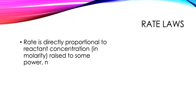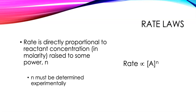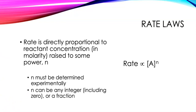That brings us to the idea of rate laws. We can say that the rate is directly proportional to the reactant concentration, and we always use molarity raised to some power n. So rate is proportional to [A]^n. And n has to be determined experimentally. This is a proportionality, though, and that's not going to be very helpful to us — so we're going to want to make it an equality.